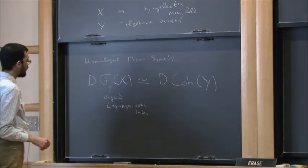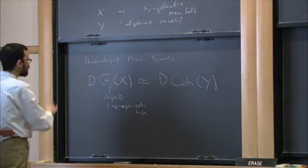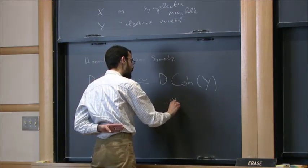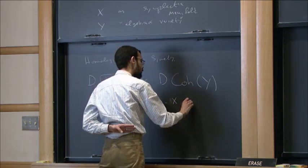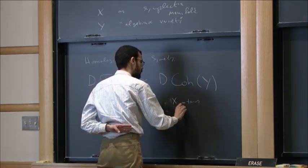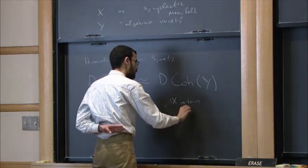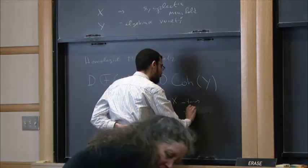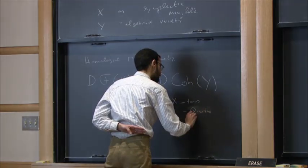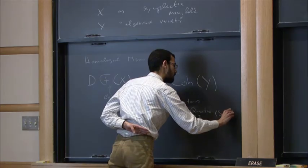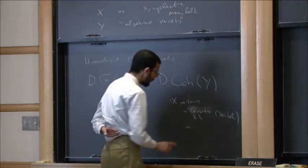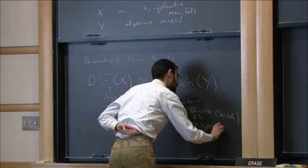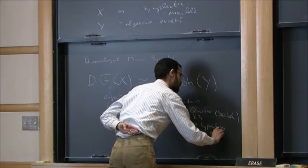The list of Calabi-Yau examples for which we know this is actually fairly short. We know this for the case where X is a torus, and for the analogous Calabi-Yau's — this is work of Fukaya. We know this for hypersurfaces in CP^n; this is work of Sheridan.